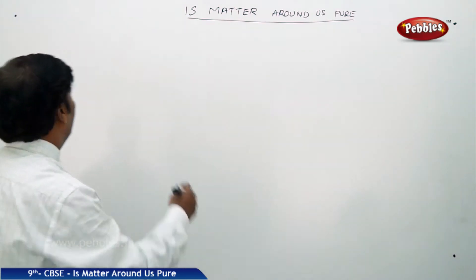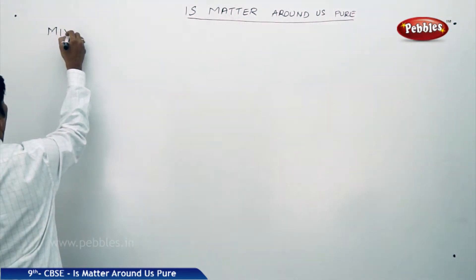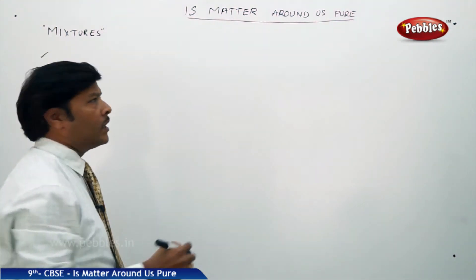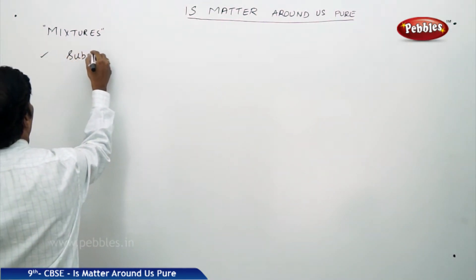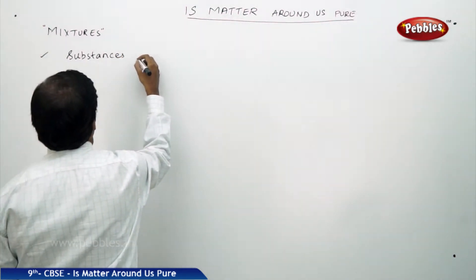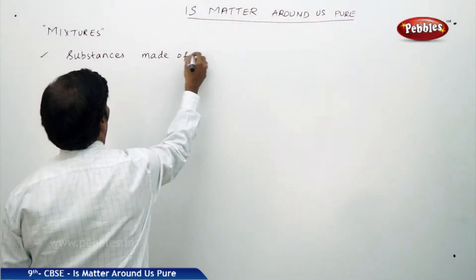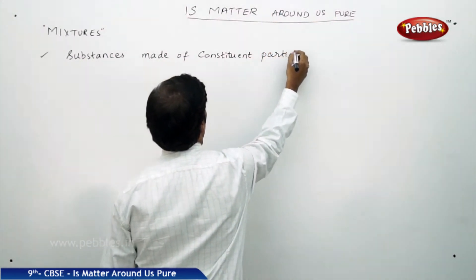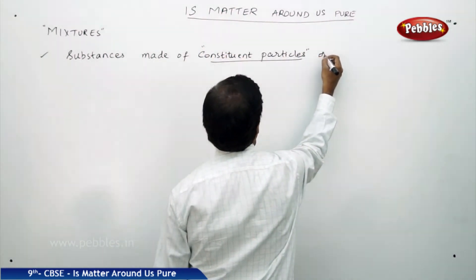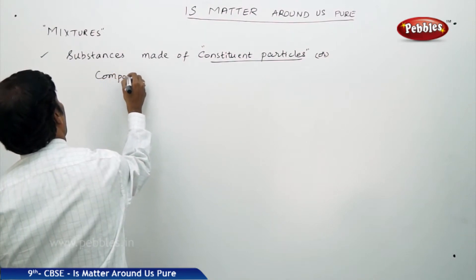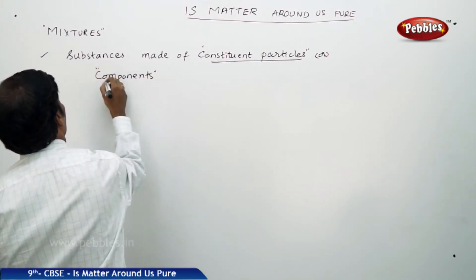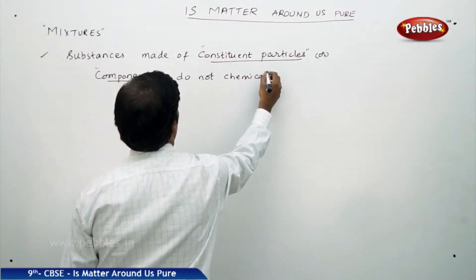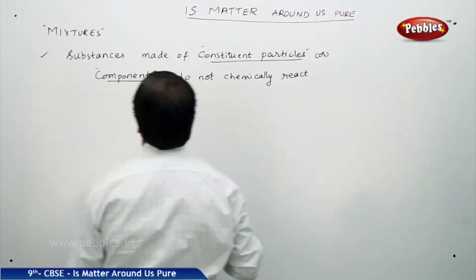The next part of the discussion here is mixtures. Mixtures are substances made of constituents or particles or components which do not chemically react with each other. Substances made of such constituent particles which do not chemically react are simply called as mixtures.